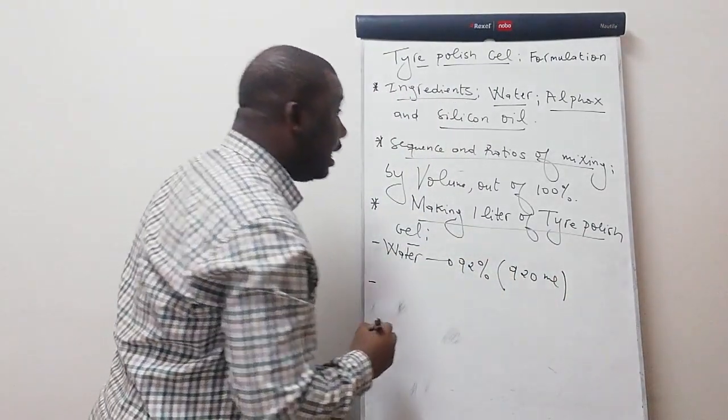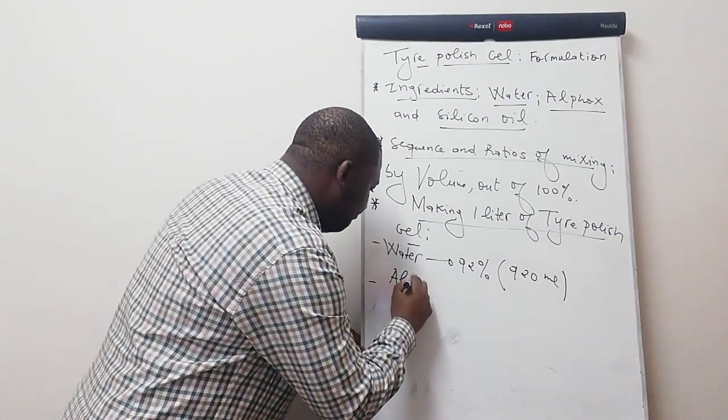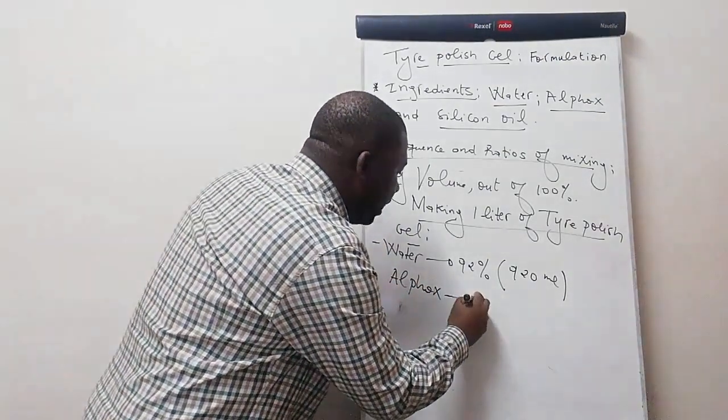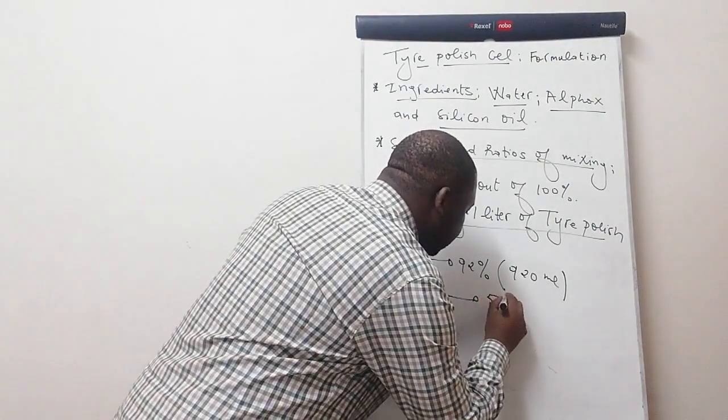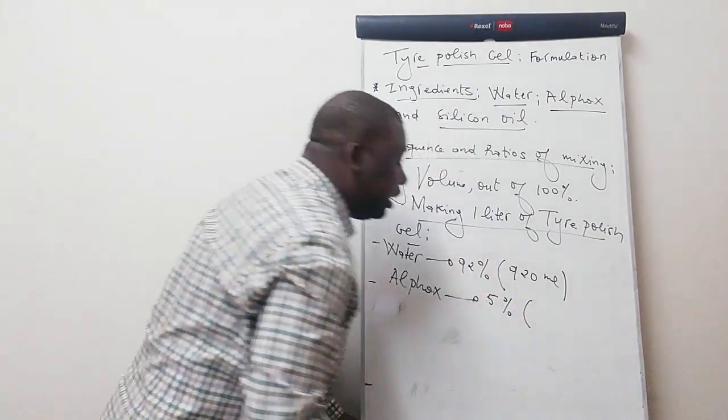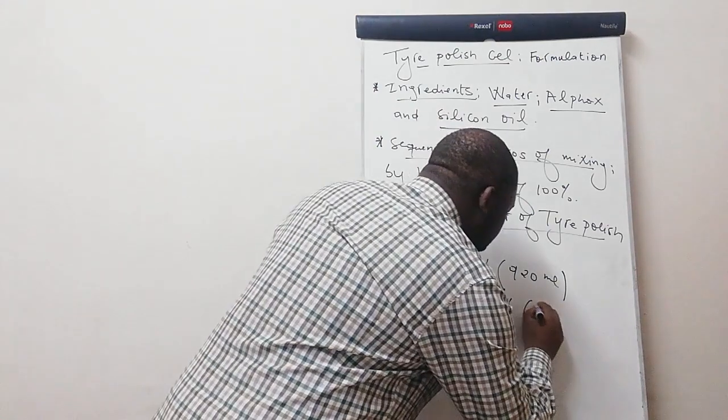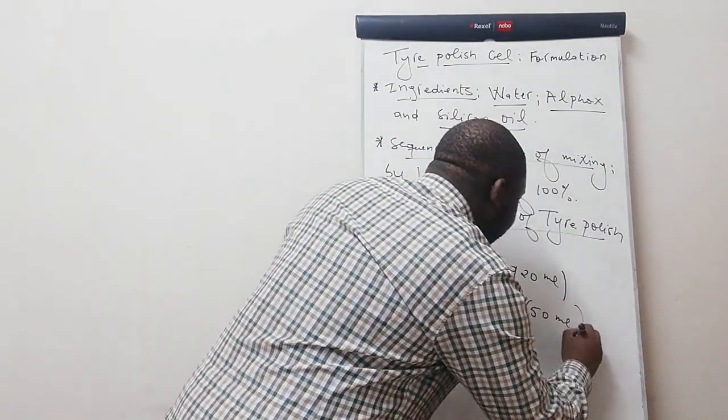The next ingredient is alphox. Alphox should be 5% of the total volume. Out of the one liter that we're manufacturing, we need to consider 50 ml of alphox.